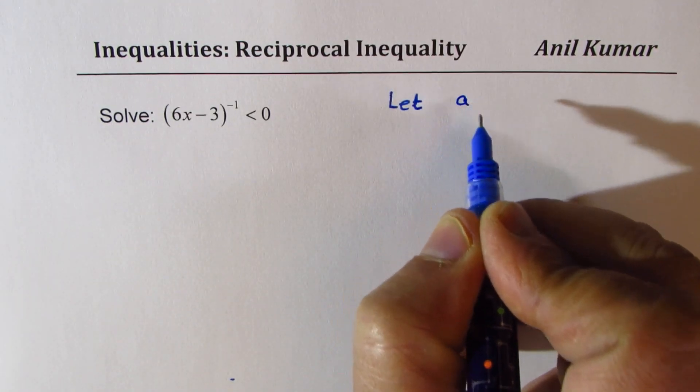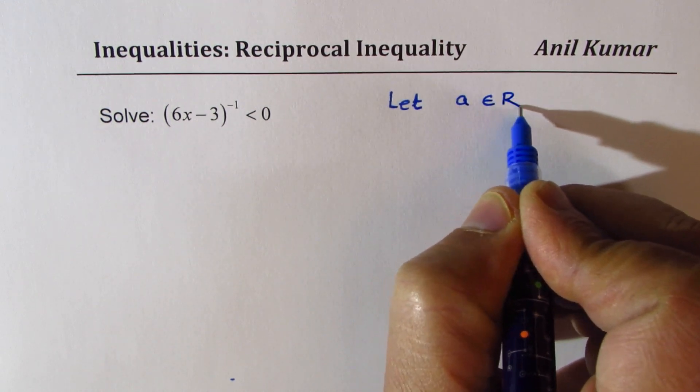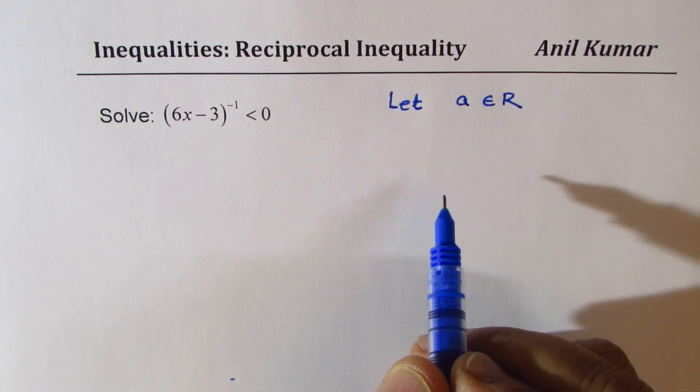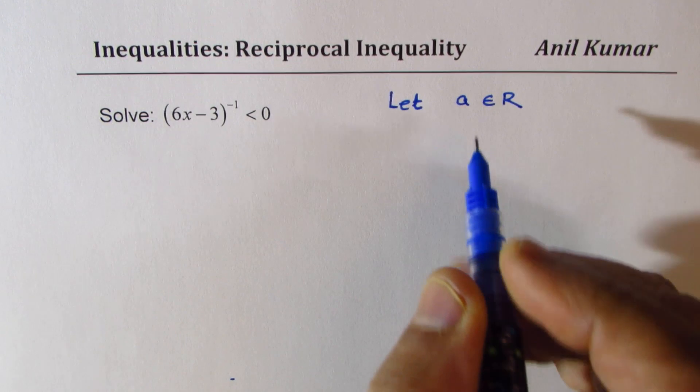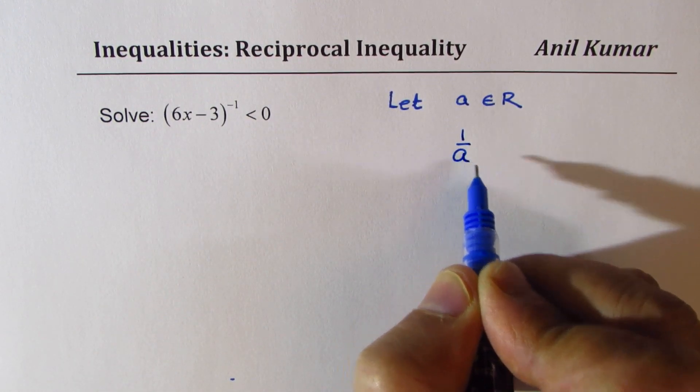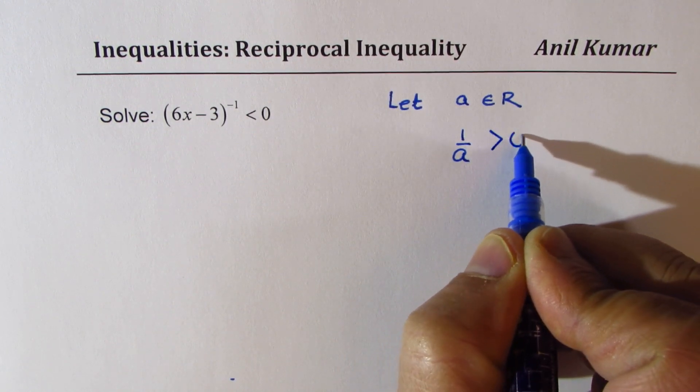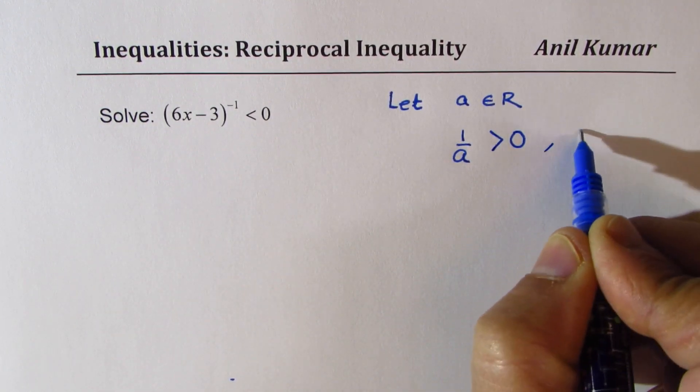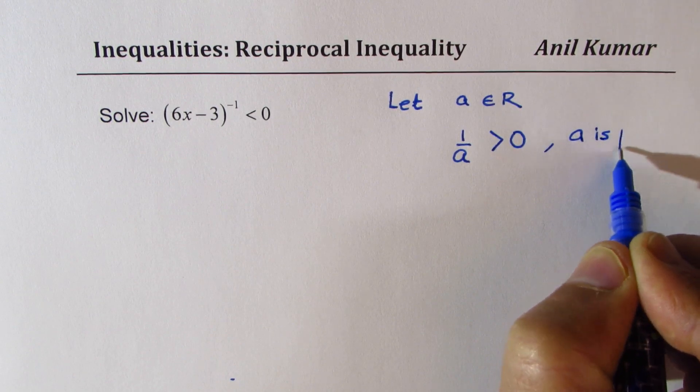Let A belongs to real numbers. A is any real number. In that case, if 1 over A is greater than 0, it means that A is positive.